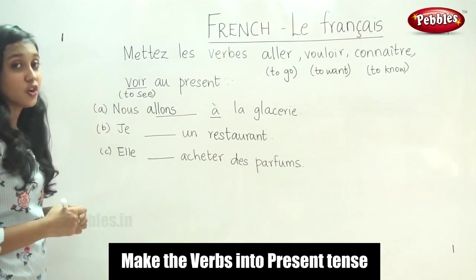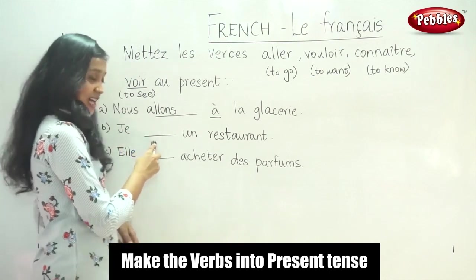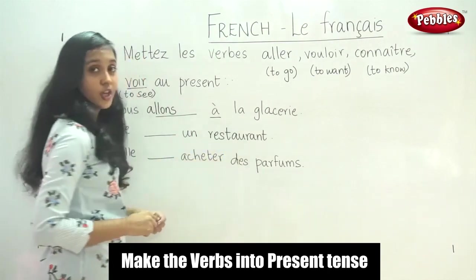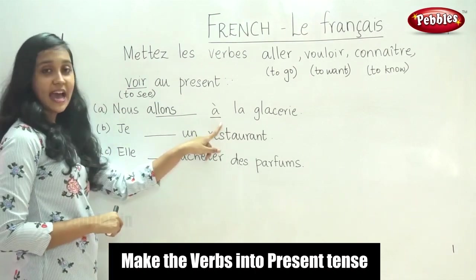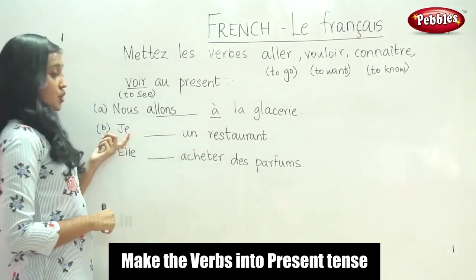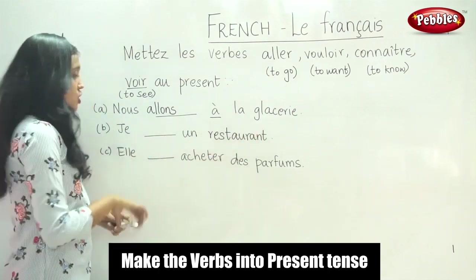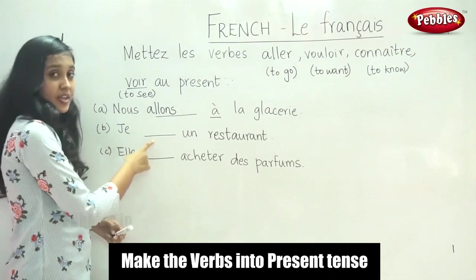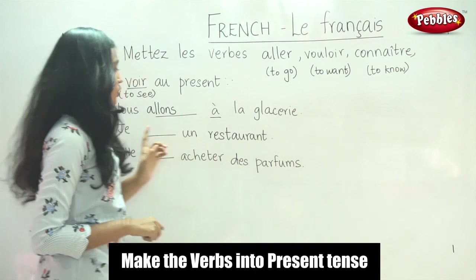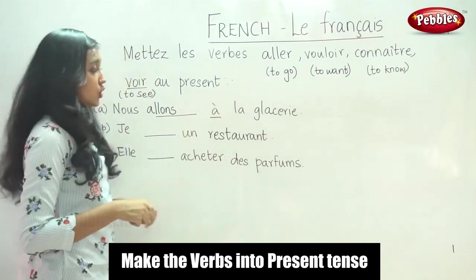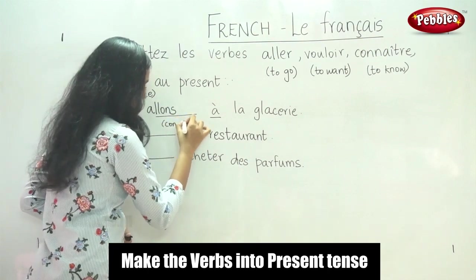Let us move to the next sentence. Try doing this on your own first. The sentence is: Je — un restaurant. You might think restaurant is a place, but we do not have 'à' here. So we have: Je — and a noun, un restaurant. The meaning would be 'I know a restaurant,' so the verb is Connaître.